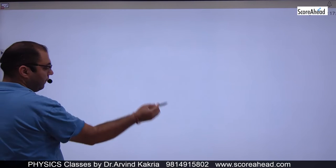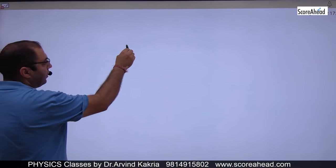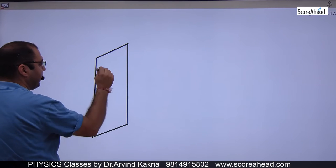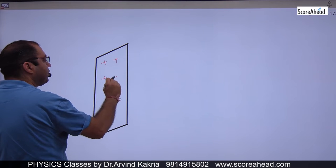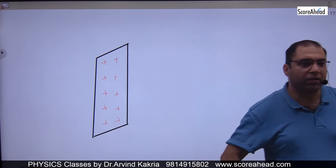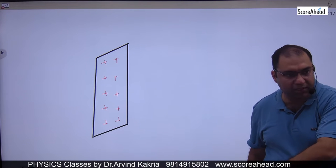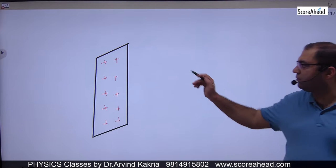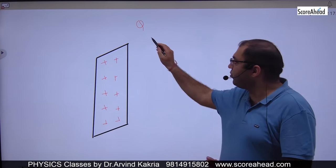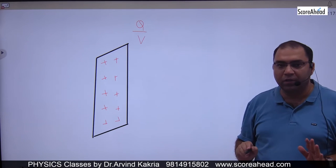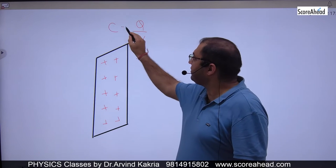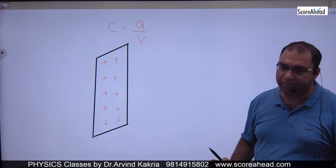Let us suppose you have a plate. This plate has a positive charge, which I have connected to the battery. The maximum charge which has come is Q. Because it has charge, it has potential, so charge Q is equal to C into V, so capacitance is Q divided by V.